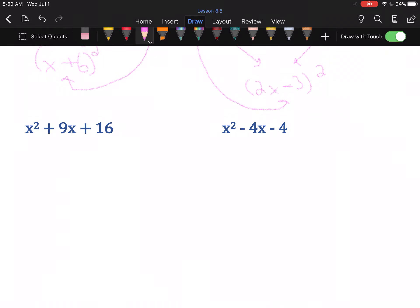Check the pattern. What is the square root of x²? x. What is the square root of 16? 4. Combine these and double. 4 times 2 is 8, 8 times x is 8x. Oh. This isn't a perfect square. It doesn't fit the pattern.